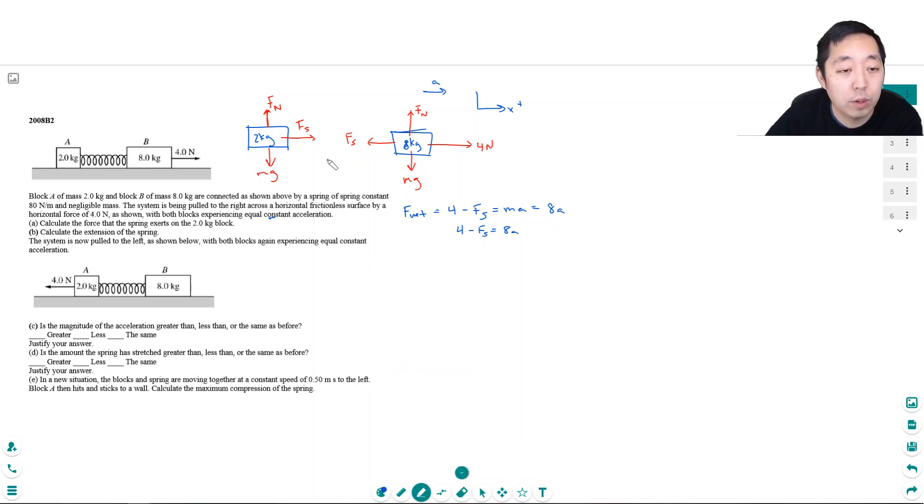So his equation, he is also accelerating with the same acceleration as this guy, A, because that's what they told us. Both blocks experience equal constant acceleration. Now, his net force in the x-direction is just Fs, and that equals 2ma, which is 2a. So Fs would equal 2a.